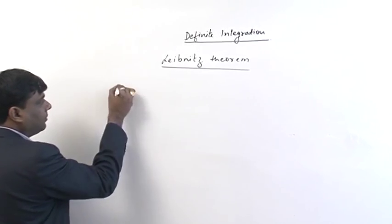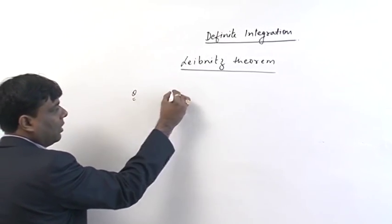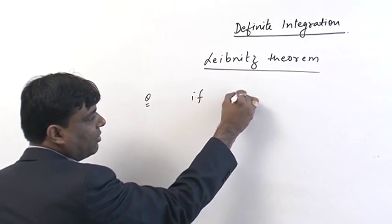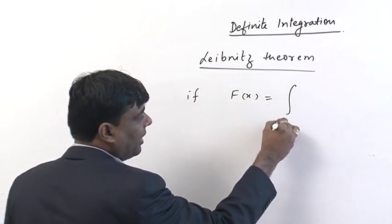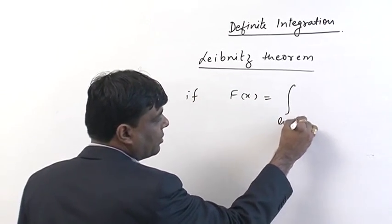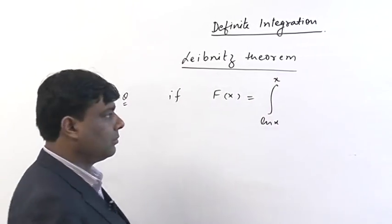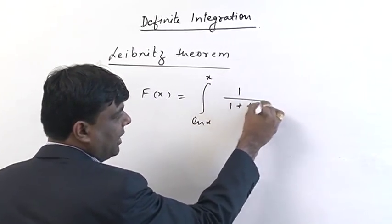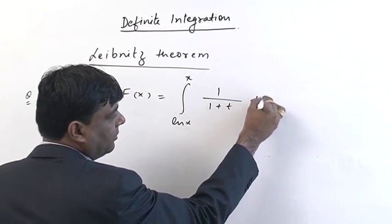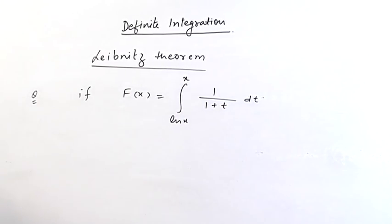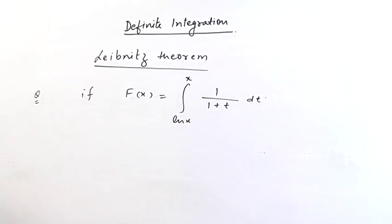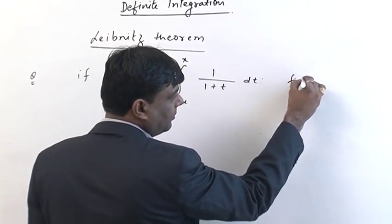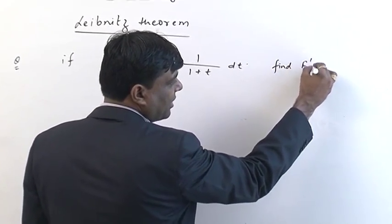The question is: if f(x) is equal to the integral from ln(x) to x of 1/(1+t) dt, find f'(x).